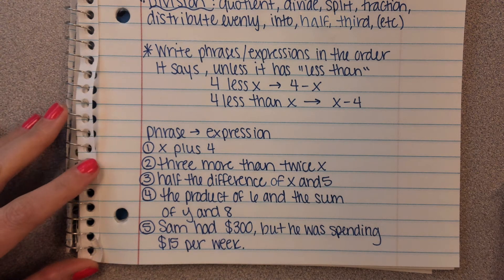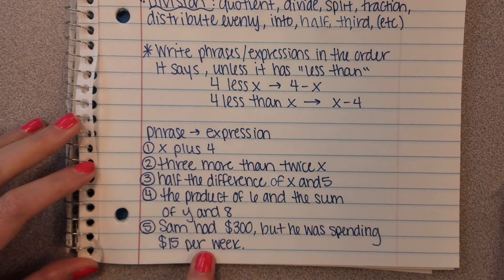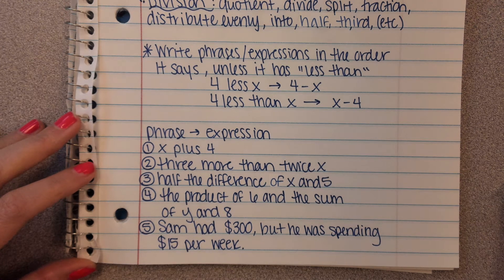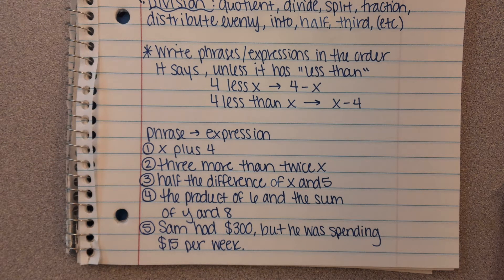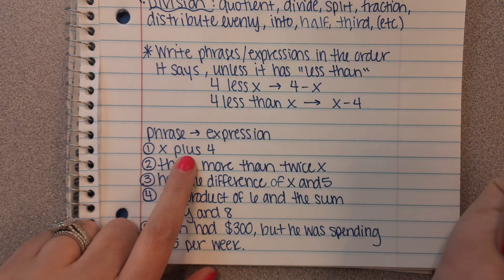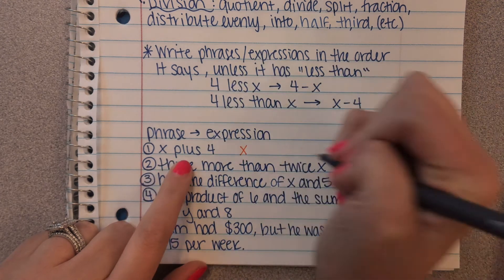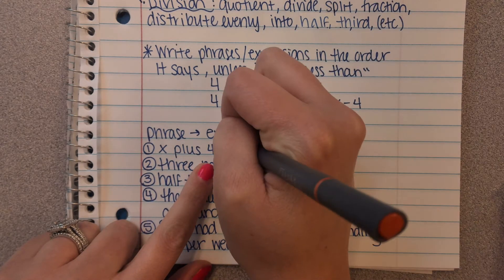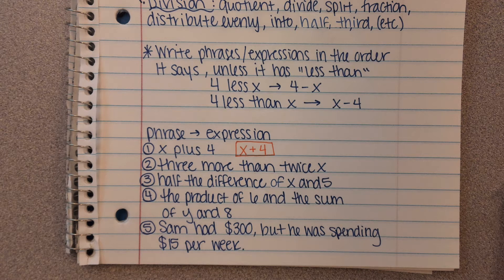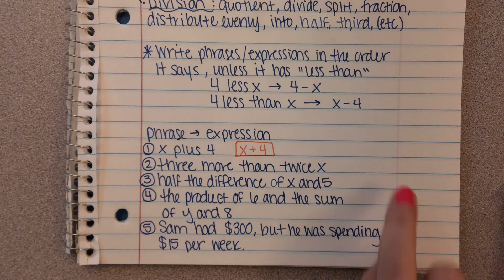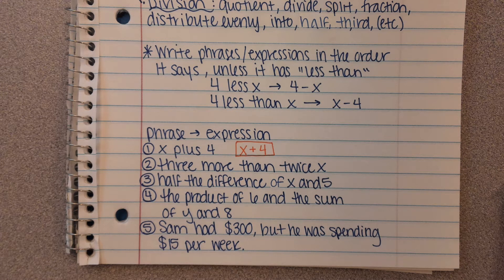Now we're going to practice going from a phrase to an expression — numbers, variables, and math symbols. I'll do number 1 with you. We have 'x plus 4.' It does not say 'less than,' so we just go in order: x plus 4. Since it's addition, you could also write 4 plus x and it would be the exact same thing. Now pause the video and try the rest of the examples, then come back and check your answers.